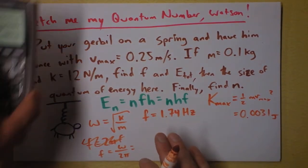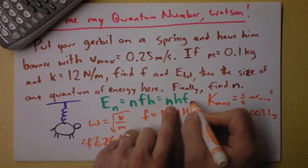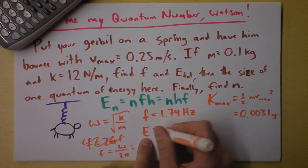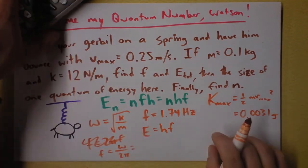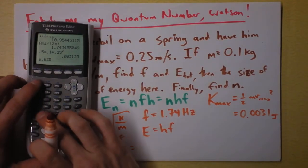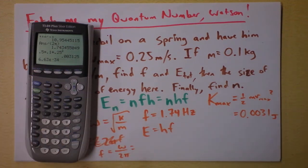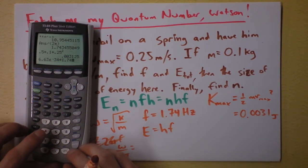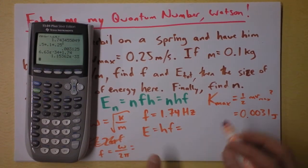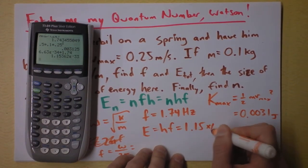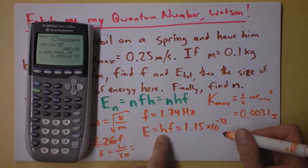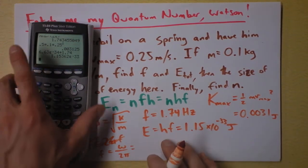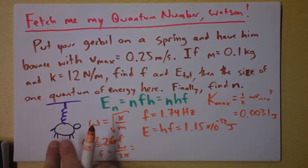And then we're trying to find the size of one quantum of energy here. Now this is as many quanta as you want of energy, but one quantum of energy, I guess a single quantum, is just going to be Planck's constant times the frequency. So I take Planck's constant, which is 6.63 times 10 to the negative 34 - that's a tiny number. And I'm supposed to multiply it by this frequency, which has units of 1 over seconds, which is 1.74. And I conclude that the energy of one quantum is 1.15 times 10 to the negative 33 units here.